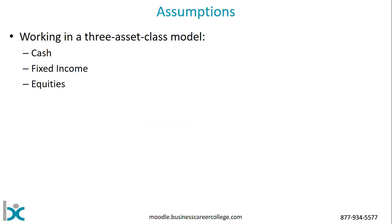For the purpose of this presentation, we're going to assume that we're working in a three-asset class model — a simple cash, fixed income, equity asset class model. A lot of people use a seven-asset class model today, and that's fine. This material works well in a seven-asset class model where you might be breaking down fixed income and equities further into their geographic components. This material should still be relevant and valid.